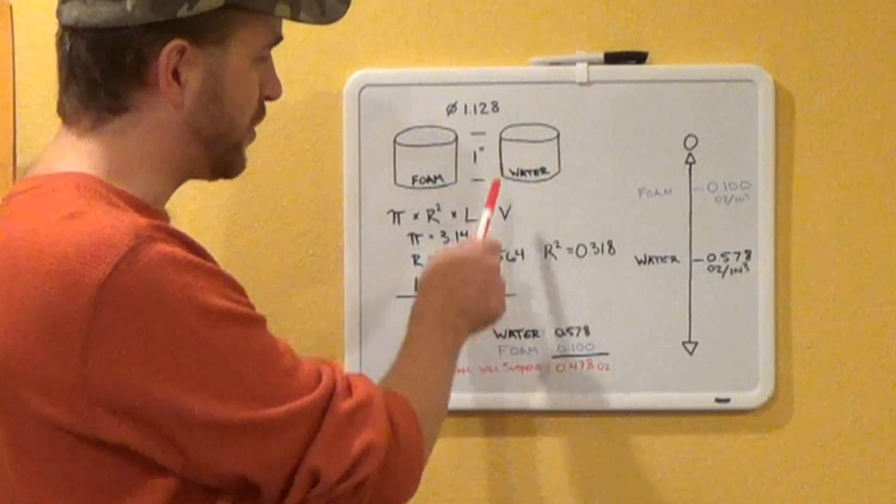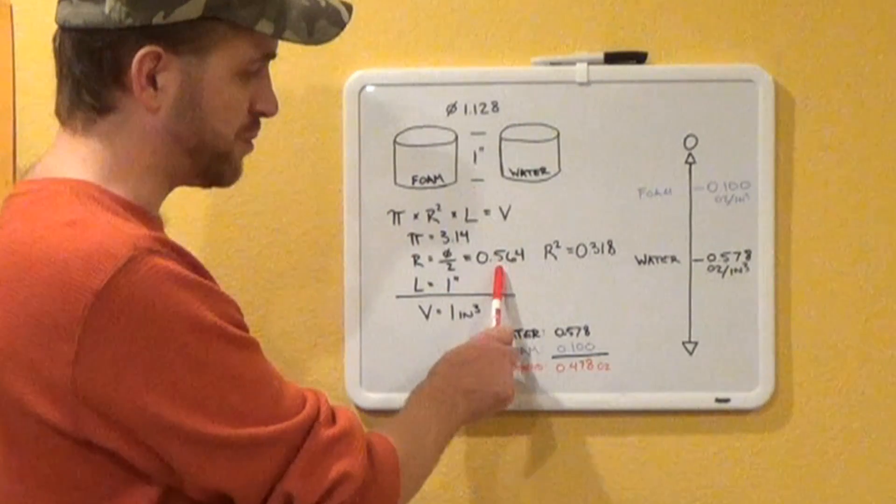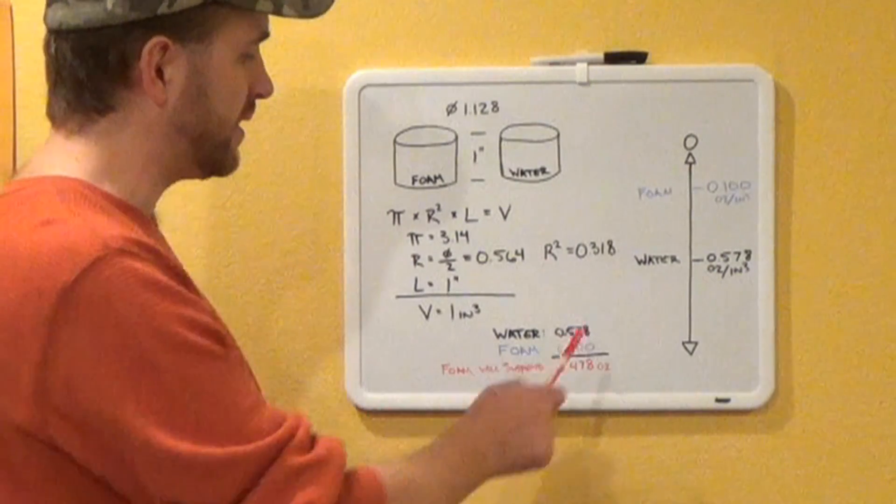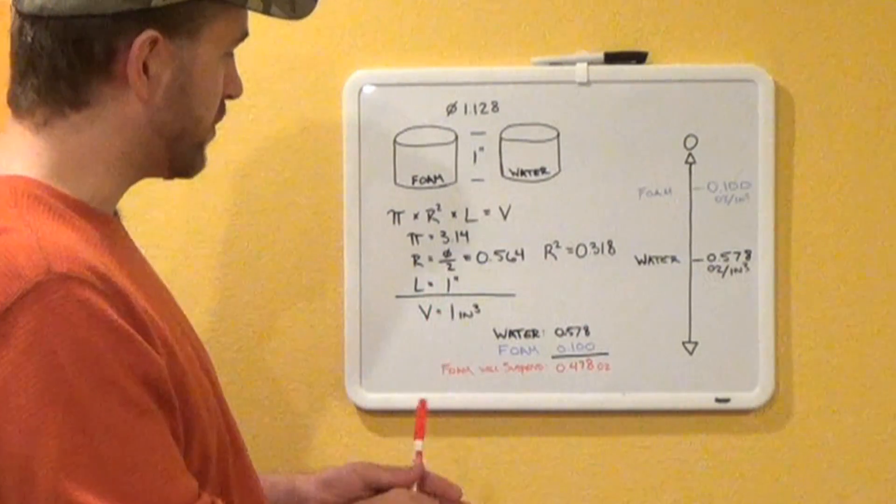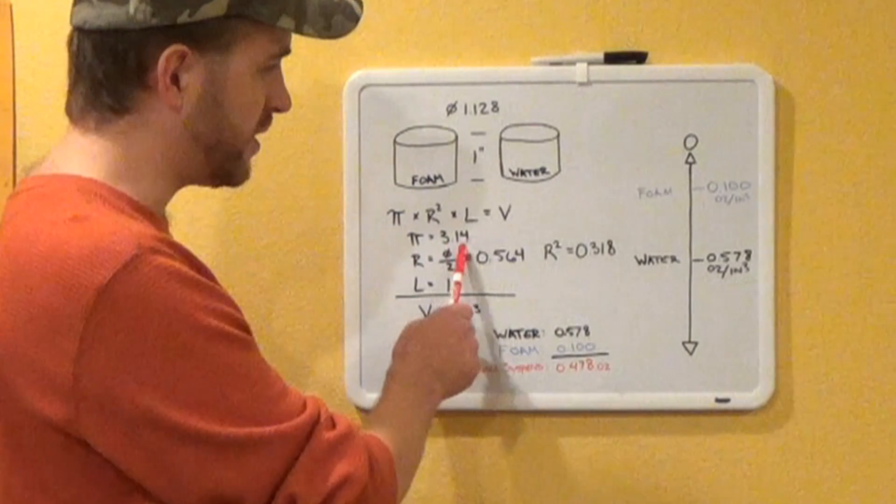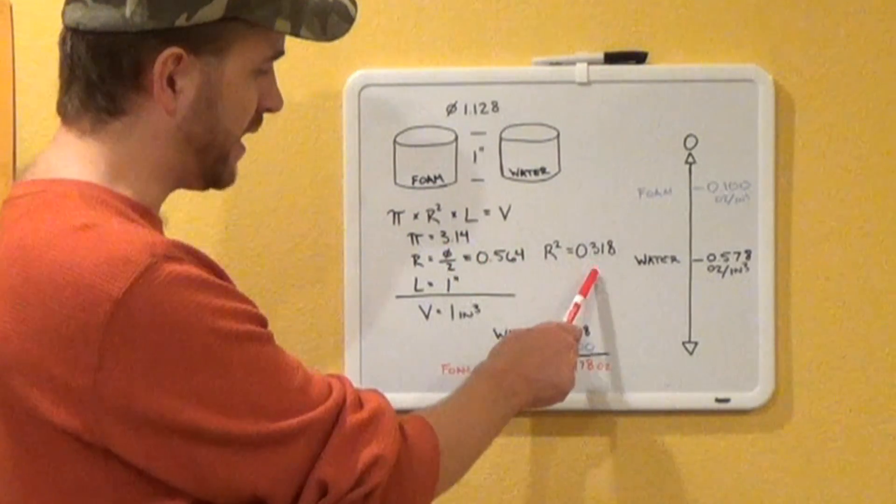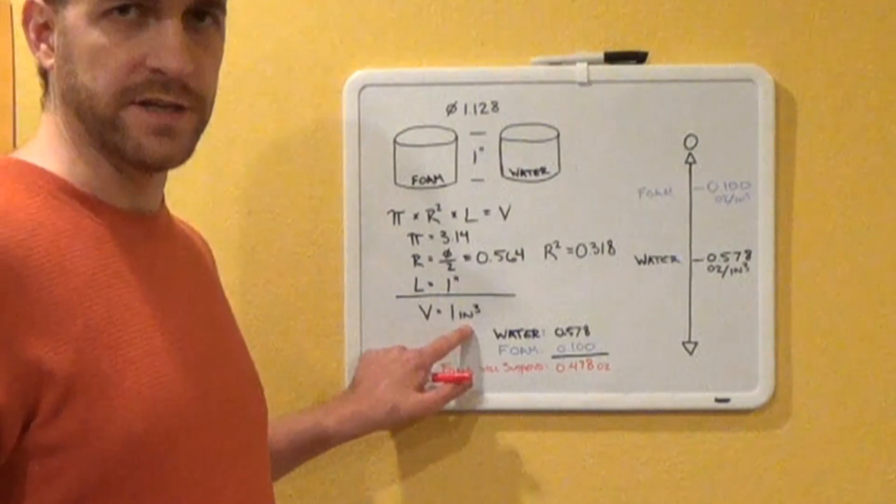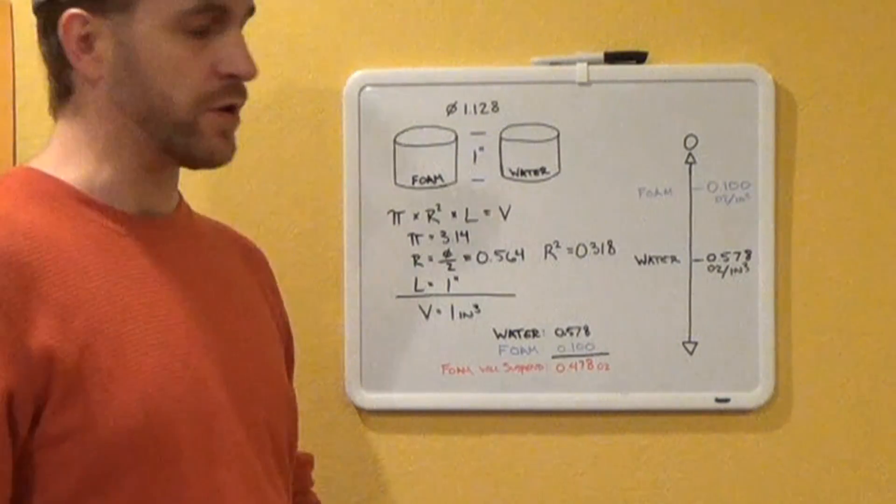1.128 divided by 2, which is 0.564. That squared is 0.318. Now our length is 1, so if we take 3.14 × 0.318 × 1, we get 1 cubic inch. So nice, easy numbers for us to use.